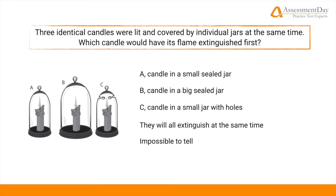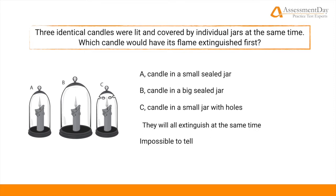Three identical candles were lit and covered by individual jars at the same time. Which candle would have its flame extinguished first? A, candle in a small sealed jar. B, candle in a big sealed jar. C, candle in a small jar with holes. D, they all extinguish at the same time. E, impossible to tell. Take a moment to pause this video and see if you can work out the question for yourself. You shouldn't need more than 15 seconds or so.